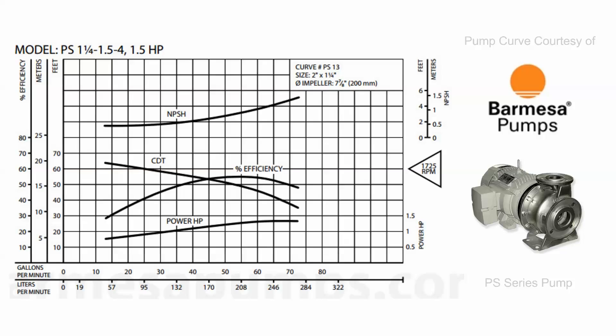This one looks quite different than the curve we looked at before — it shows a lot of information. The first curve I'm going to point out is the performance curve of the pump. This is going to tell us that this pump can produce a maximum head or pressure of approximately 63 feet, and it's going to have a maximum flow rating of approximately 72 gallons per minute. What this particular curve shows that the first one did not is the efficiency curve, which is very interesting.